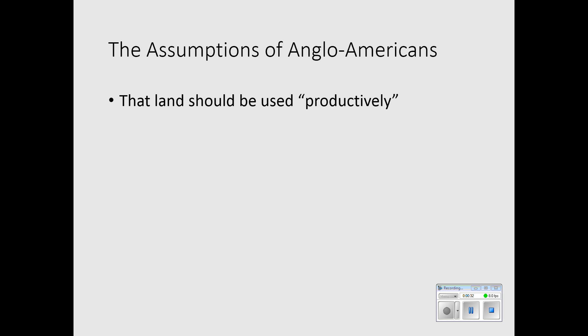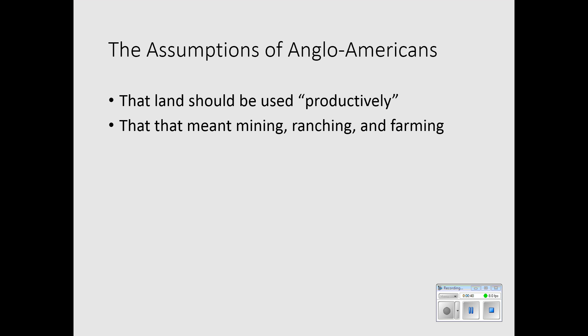The first assumption was that land should be used productively, as they defined productive use. That meant mining, ranching, and farming — the three activities that brought so many settlers to the West in the period after the Civil War. The assumption was that if someone was living a nomadic life on that land, they weren't using it productively. Of course, Native Americans strongly disagreed. This was their way of life.